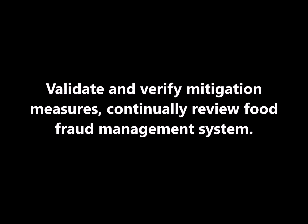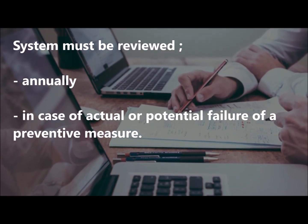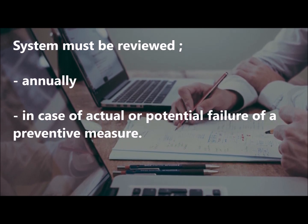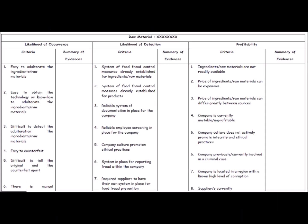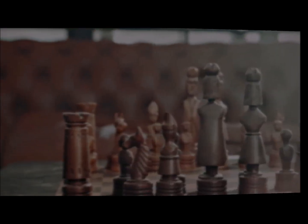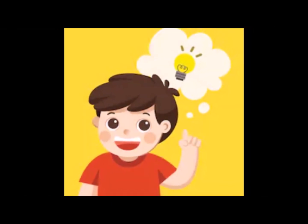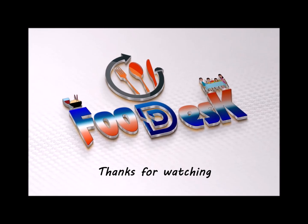Step 3: Validate and verify mitigation measures, and continually review the food fraud management system. The system must be reviewed annually as well as in case of actual or potential failure of a preventive measure. Here is the vulnerability assessment template for your reference. Go through this template, and if you want more information, please comment below. The next video is about ISO 22000:2018, updated clause on context of the organization. Hope you got a clear understanding on vulnerability assessment. Thanks for watching, and never forget to subscribe.